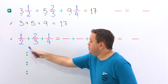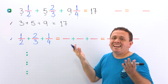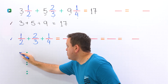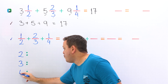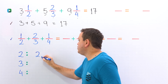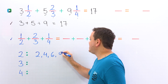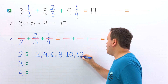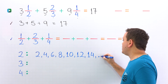As you can see, these three fractions have different denominators. To find the sum, we need the least common multiple of the denominators. The denominators are two, three, and four. The first multiples of two are: two, four, six, eight, ten, twelve, fourteen, and so on.